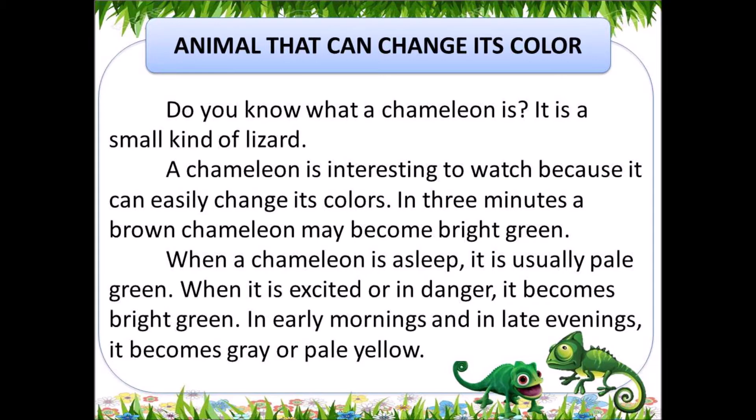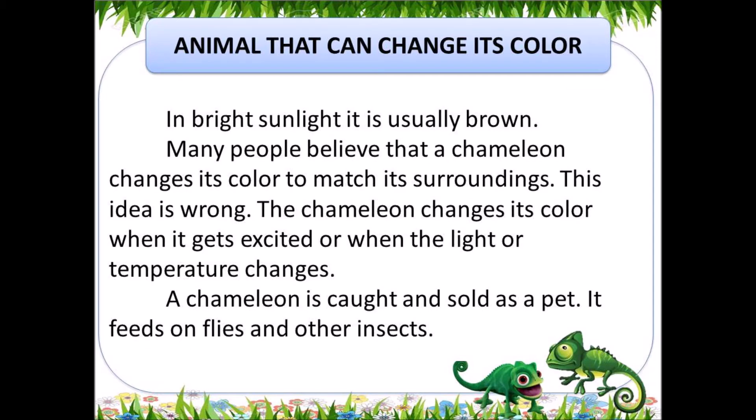When a chameleon is asleep, it is usually pale green. When it is excited or in danger, it becomes bright green. In early mornings and in late evenings, it becomes gray or pale yellow. In bright sunlight it is usually brown.